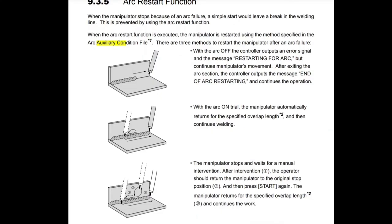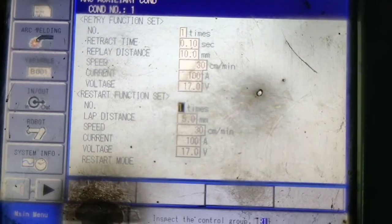With the arc on trial, the manipulator automatically returns to the specified overlap length and then continues welding. You have understood by this process what happened.